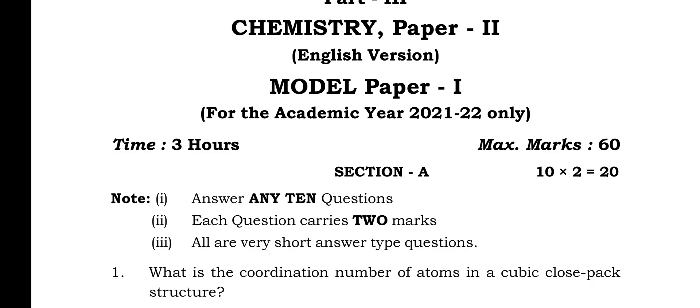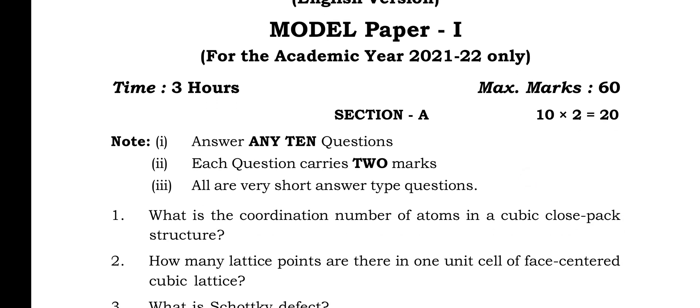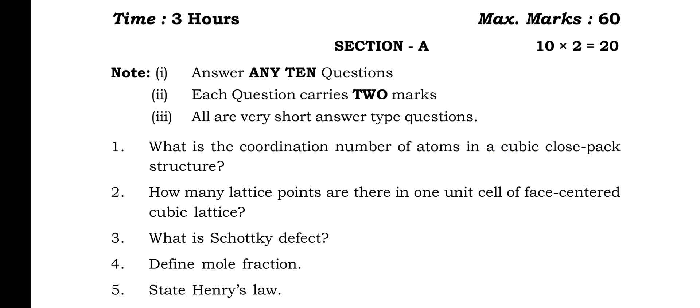First we have to learn Section A. Section A has 15 questions in it and you have to write any 10 questions. Each question carries two marks only, so Section A carries 20 marks. You have five extra choice questions. All are very short answer type questions. Now we are going to see what is the first question.